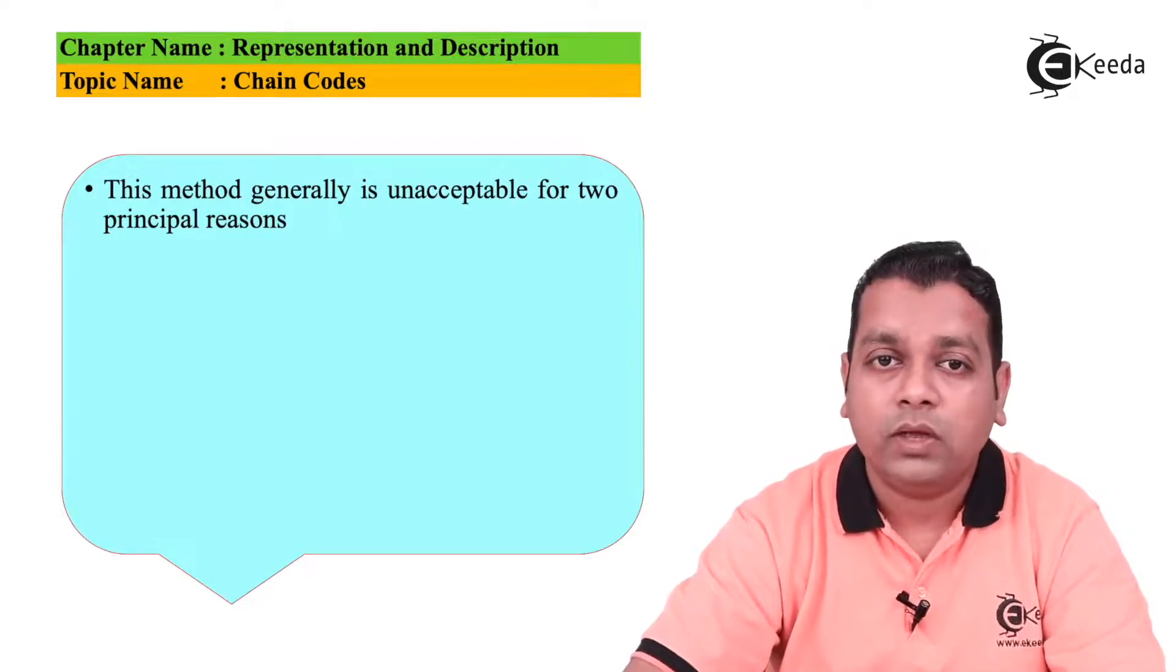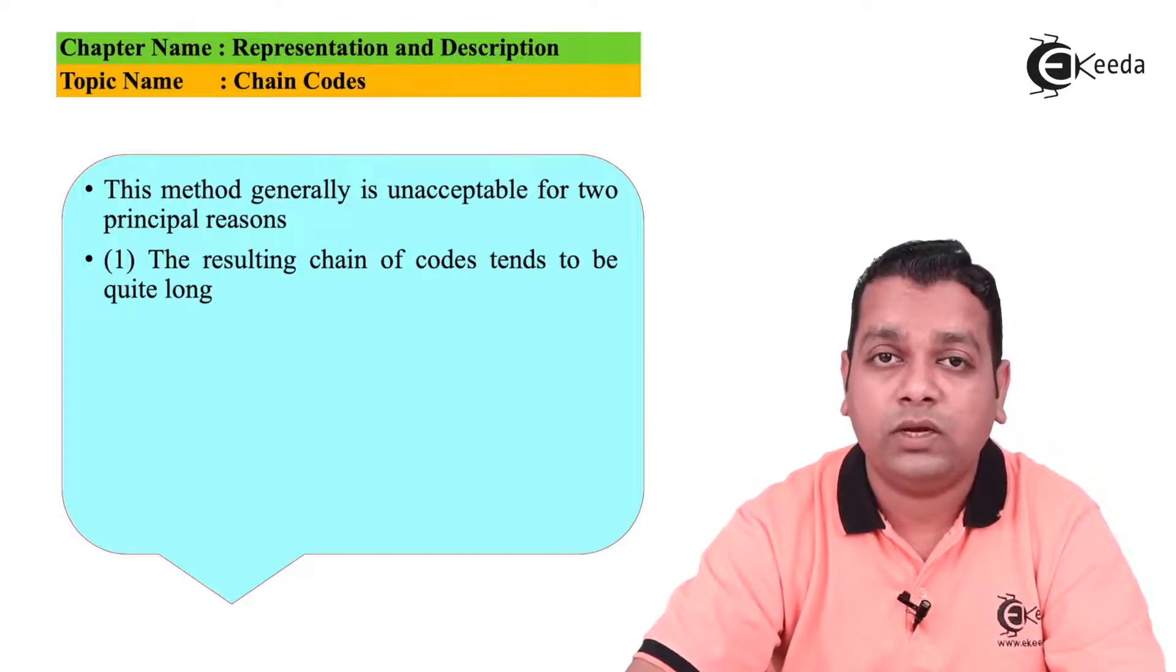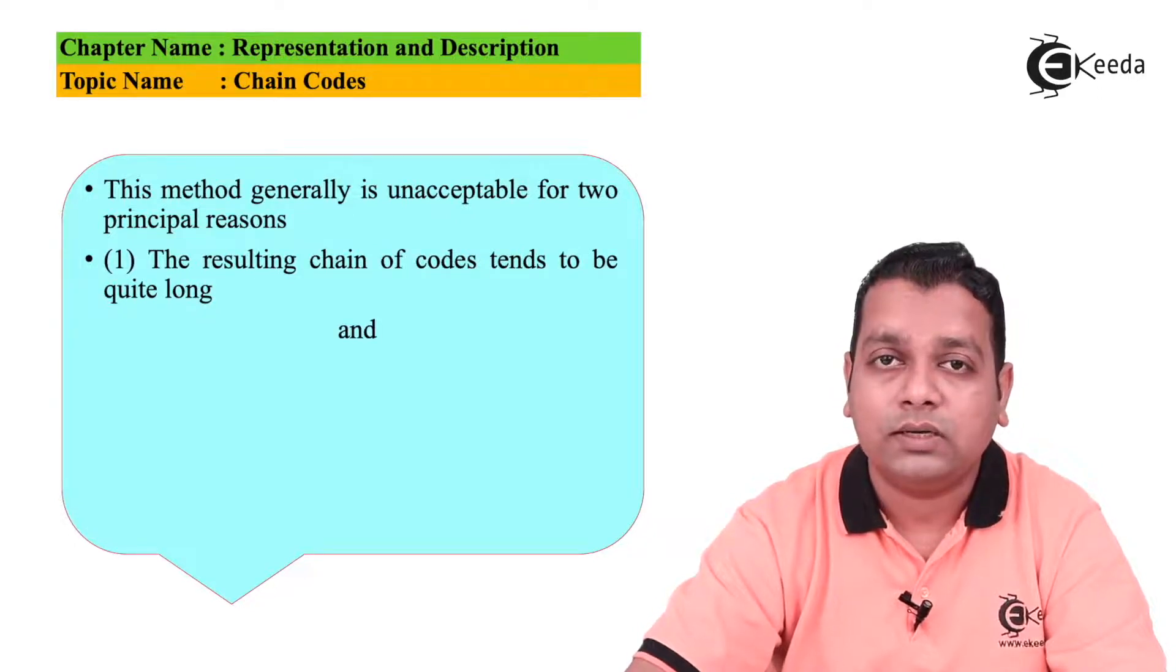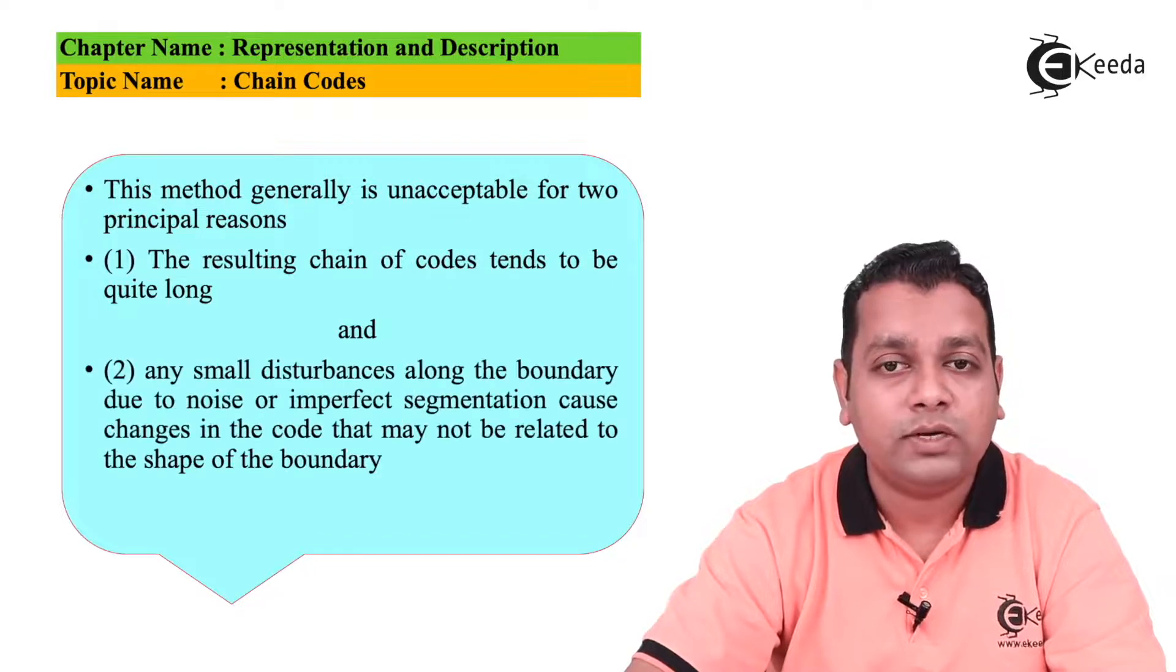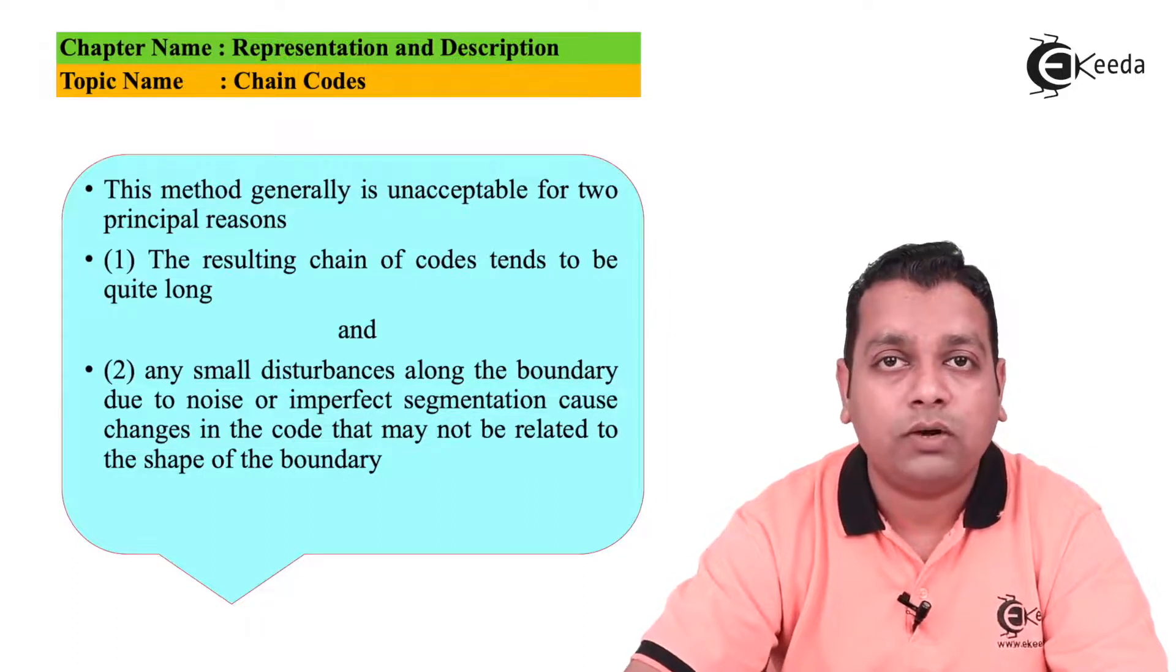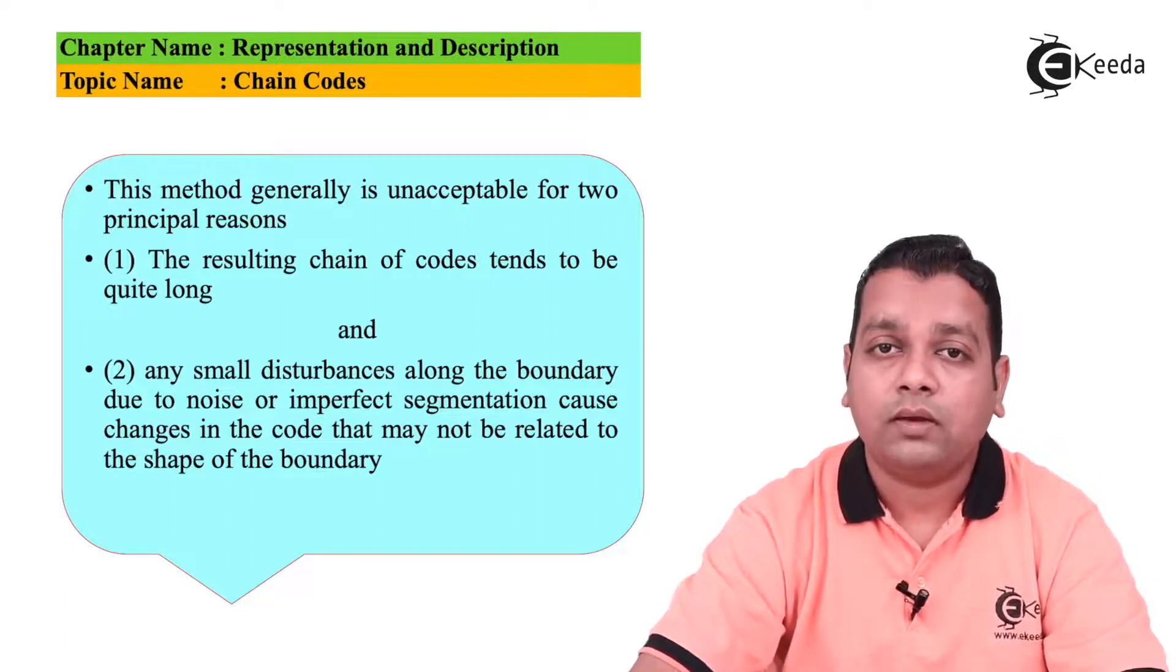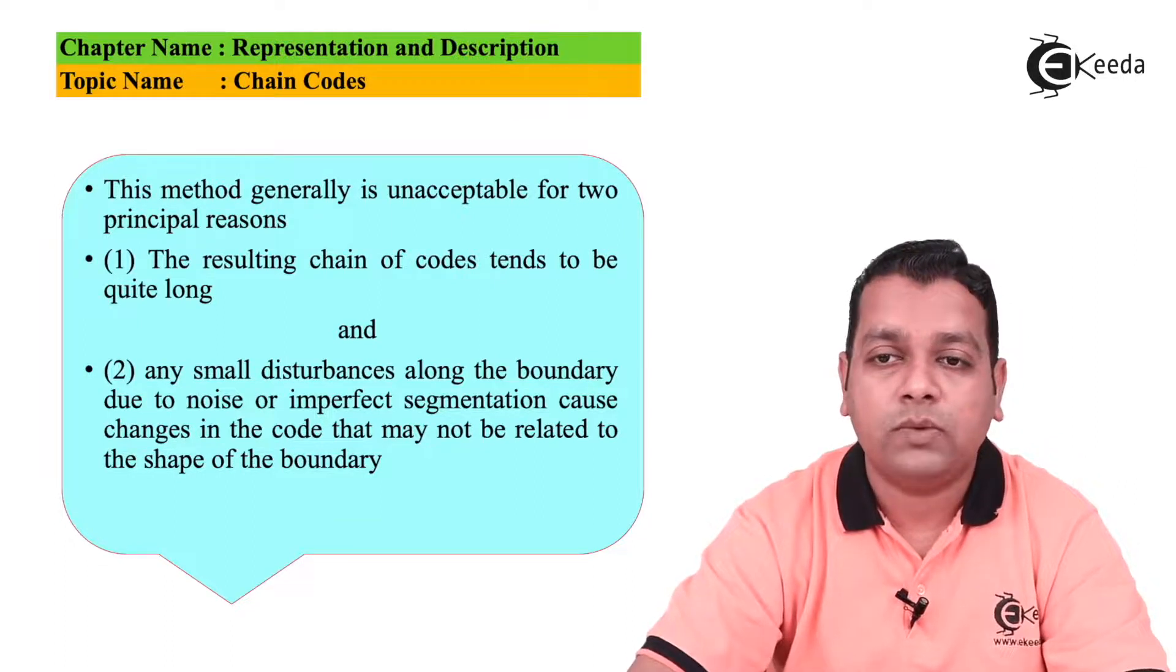Now this method generally is unacceptable for two principal reasons. The first reason, the resulting chain of codes tend to be quite very long. And the second reason is that any small disturbances along the boundary due to the presence of noise or imperfect segmentation technique causes changes in the code that may not be related to the shape of the boundary.